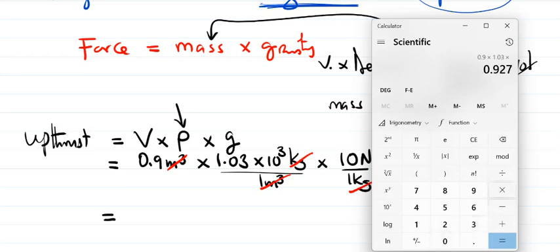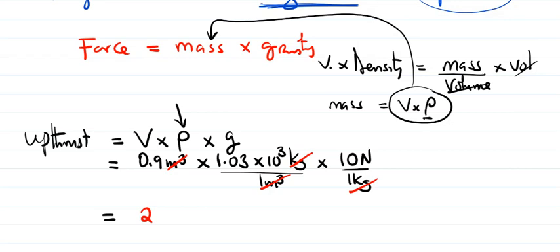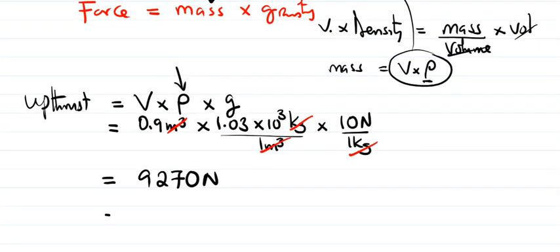Times 10 to the power 3, then multiply by 10. That gives us 9,270 newtons, which can also be written as 9.27 times 10 to the power 3 newtons. That is our thrust force.